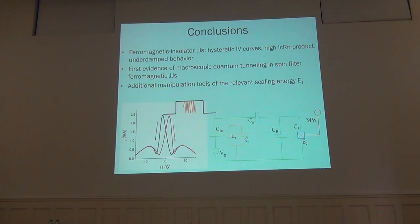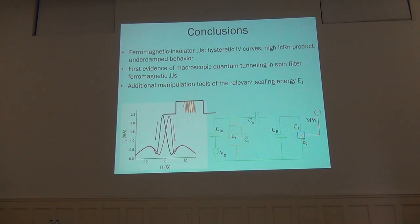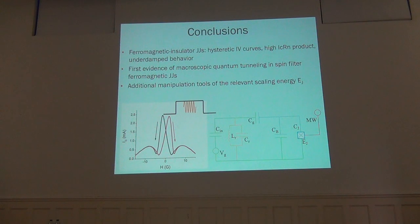In conclusion, we have studied the phase dynamics of ferromagnetic Josephson junctions with a ferromagnetic insulator barrier. These junctions seem quite promising for possible application in classical and quantum circuits because they are characterized by high values of the ICRN product, underdamped behavior, and macroscopic quantum tunneling has been demonstrated for the first time. We have also demonstrated that it is possible to manipulate the Josephson energy by means of different tools — in this case magnetic field pulses and microwaves — and therefore these junctions may be used in quantum circuits in order to reduce a specific noise source.